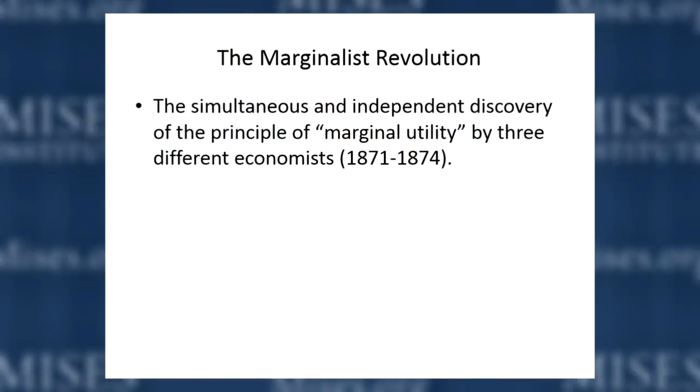The Marginalist Revolution refers to a period when three economists working in different countries all came up with what we call the principle of marginal utility. This principle is extremely important in explaining all economic activity, but it's also very subject to misconception because the other two economists, besides Menger, who discovered the principle, developed it in quite a different way than Menger did — a more mathematical way.